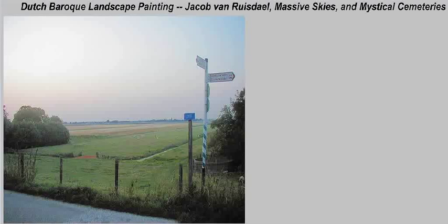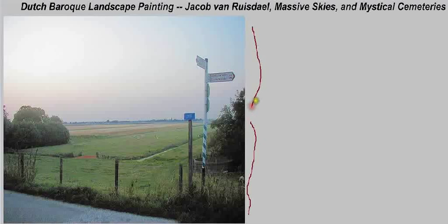If you're ever lucky enough to visit Holland and go out into the countryside, you might see something like this image on the screen. What's striking about this image is the flatness and openness of the landscape, which you see in the lower half, and the big, wide, open sky that seems to dominate this photograph. That is a real hallmark of the Dutch countryside.